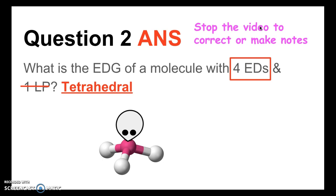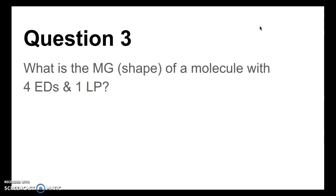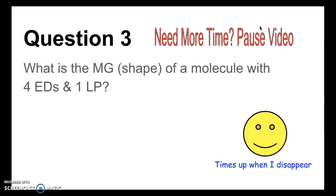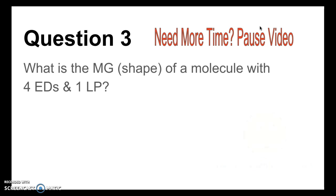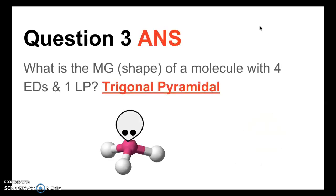Stop the video to note anything down or correct your answers. Moving on to question 3: What is the molecular geometry or shape of a molecule with four electron domains and one lone pair? The answer is trigonal pyramidal. Remember, the molecular geometry describes the arrangement of bonds only. With molecular geometry, we ignore the lone pairs and just focus on the bonds. Once we eliminate the lone pair from our view, we can see that this is a trigonal pyramidal shape.